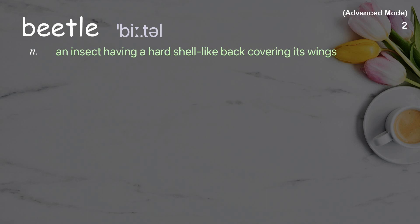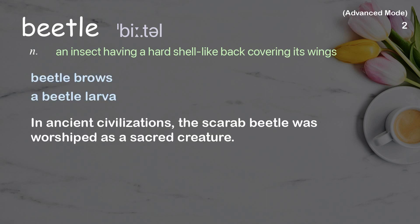Beetle: an insect having a hard shell-like back covering its wings. Examples: beetle browse, a beetle larva. In ancient civilizations, the scarab beetle was worshipped as a sacred creature.